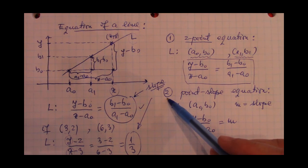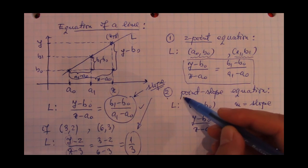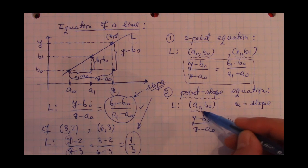Now, the second equation of the same line, we are going to refer to this equation as the point-slope equation. And the point-slope equation is very useful when we actually have a point, let's say a0, b0 of a line, and we have this fraction,